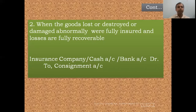To summarize: in the first case, goods lost with no insurance policy — the entire amount of loss is transferred to profit and loss account. In the second case, goods lost abnormally but fully insured and fully recoverable — Bank Account debit to Consignment Account if already recovered, or Insurance Company Account debit to Consignment Account if it is due.